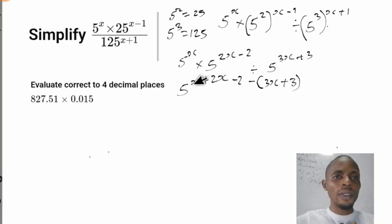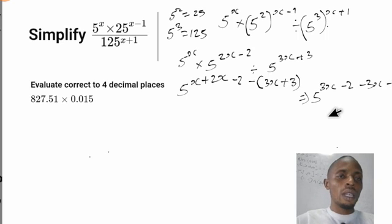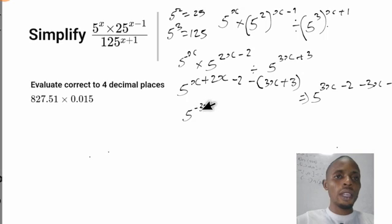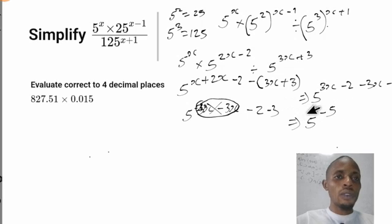Let's collect like terms. We have s plus 2s minus 3s, and the constants minus 2 minus 3. So s plus 2s minus 3s gives zero — those cancel out. Then minus 2 minus 3 gives minus 5. So we are left with 5 to the power of minus 5.